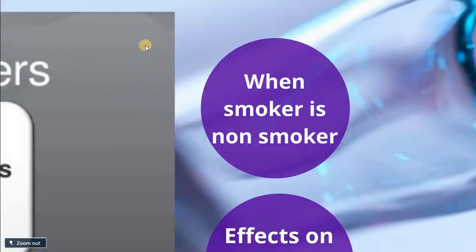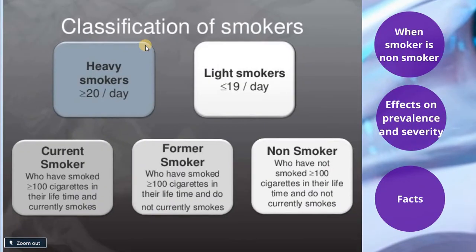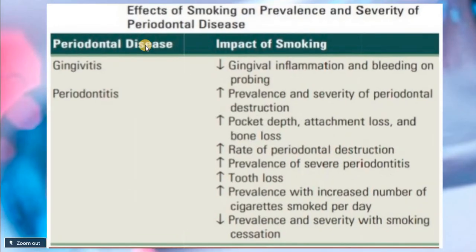Now let us go to the effects of smoking on the prevalence and severity of periodontal disease. We know that smoking is the major risk factor for periodontitis, affecting its prevalence, extent, and severity. In addition, smoking adversely impacts the clinical outcome of non-surgical and surgical therapy, as well as the long-term success of implant placement.